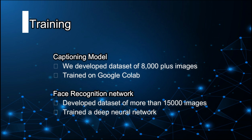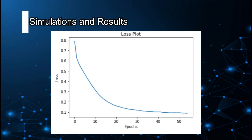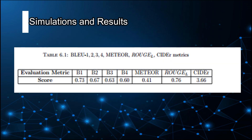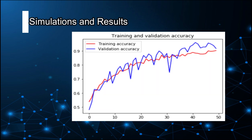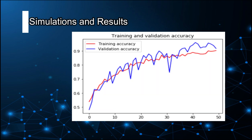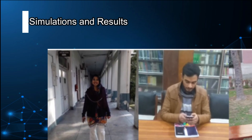The captioning model is trained on Google Colab with a dataset of 8,000 plus images. The deep neural network for face recognition is trained on more than 15,000 images. The loss plot shows that by increasing the number of epochs, loss decreases. The evaluation matrix and its scores are shown, along with the training and accuracy plot. Classification accuracy on our test dataset is 95.7 percent.